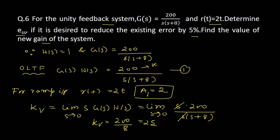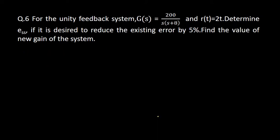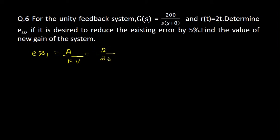When K_v is given, the steady state error E_SS1 equals the magnitude of the signal divided by K_v. The magnitude a is 2, so E_SS1 = 2/25, which gives E_SS1 equal to 0.08.